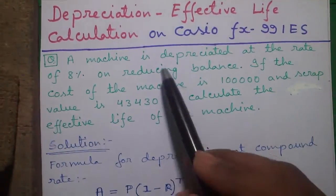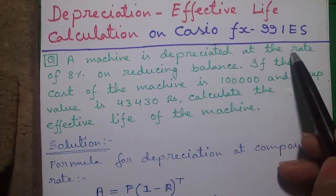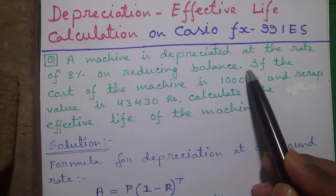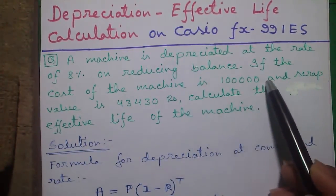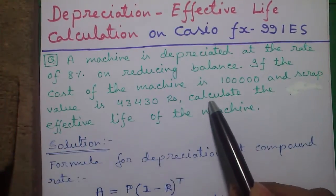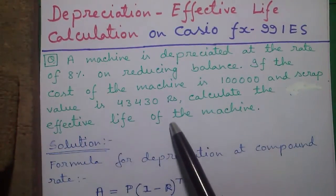Our question is, a machine is depreciated at the rate of 8% annually on reducing balance. If the cost of the machine is 1 lakh and the scrap value is 43,430 rupees, then calculate the effective life of the machine.